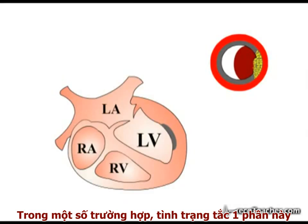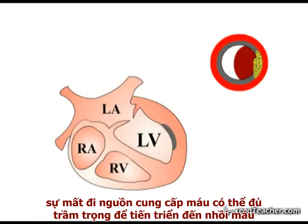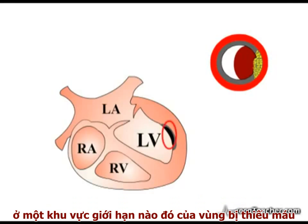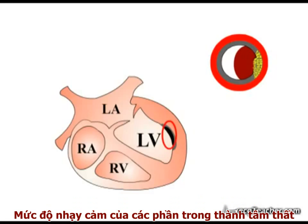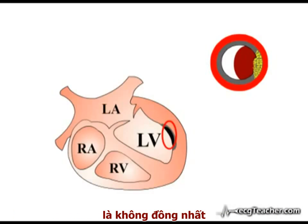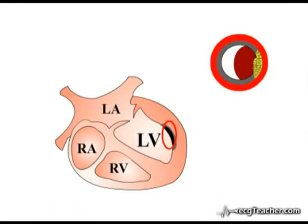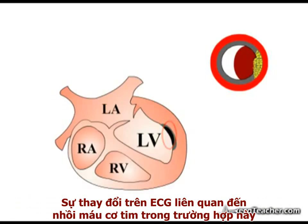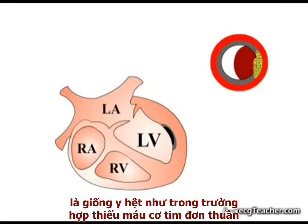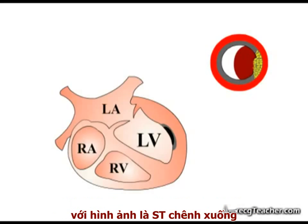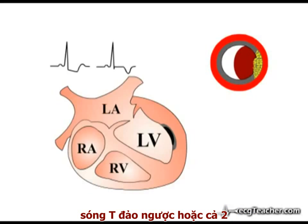In some cases of partial obstruction, however, the loss of blood supply may be sufficient to progress to infarction in a limited region of the ischemic area. The susceptibility of the ventricular wall to this type of partial thickness infarction is not uniform — the subendocardial region seems to be the most precarious in terms of blood supply. The ECG changes associated with infarction in this situation are identical to those of pure ischemia, with depression of the ST segment, T wave inversion, or both.